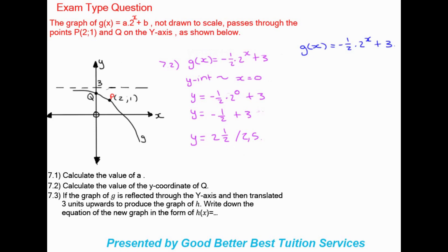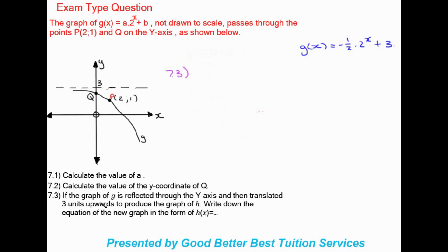Question 7.3 asks: if the graph of g is reflected through the y-axis and translated three units upwards to produce the graph of h, write down the equation of the new graph h(x). The y-axis is our vertical line. Reflecting through it and then translating three units upward will change the equation in two ways.